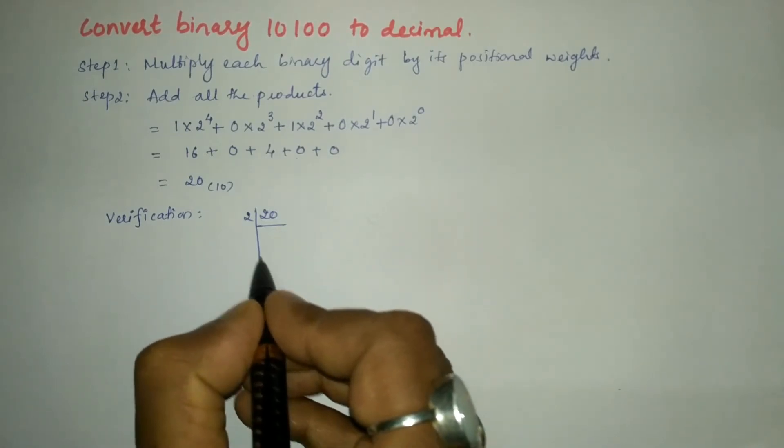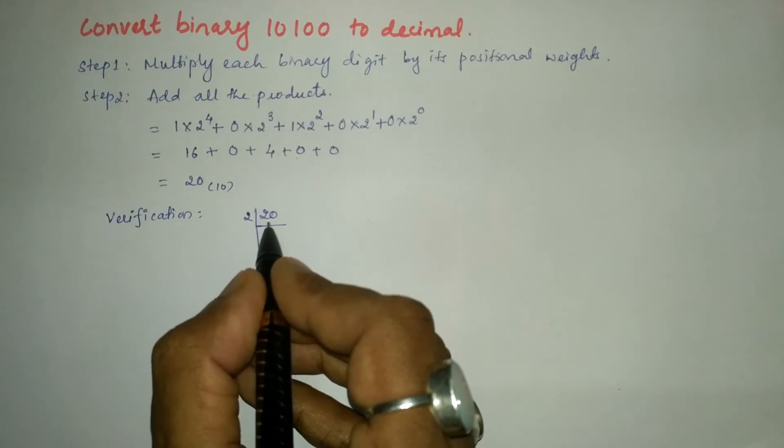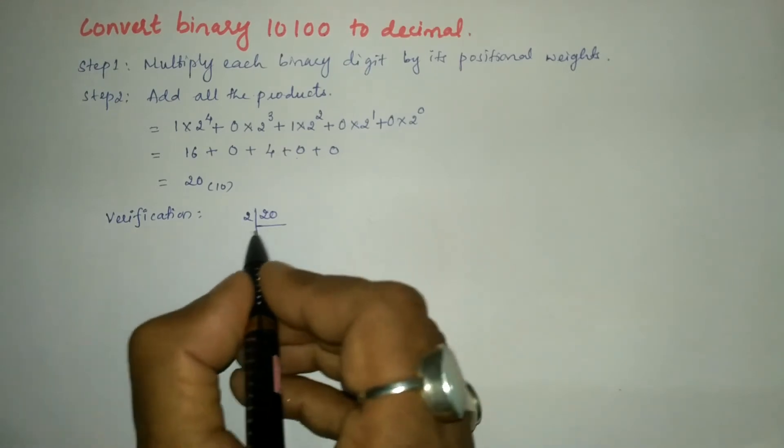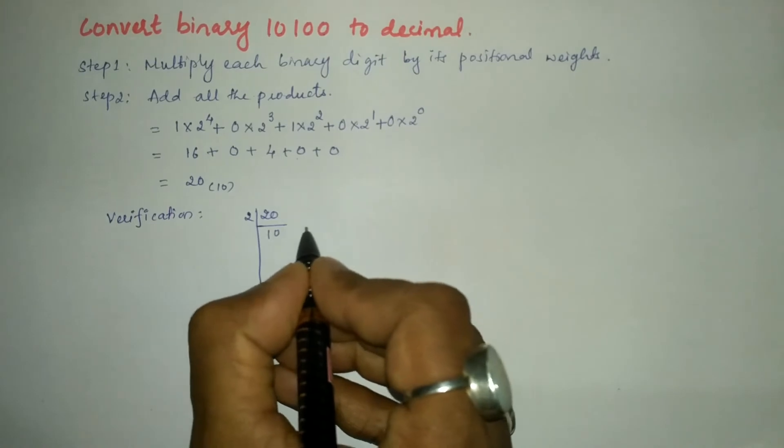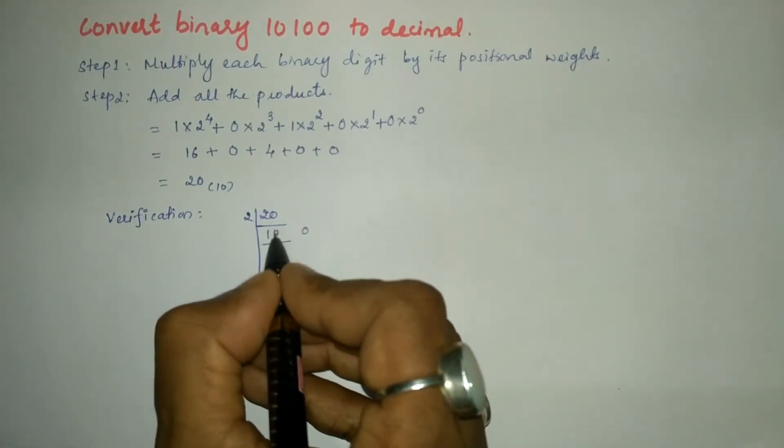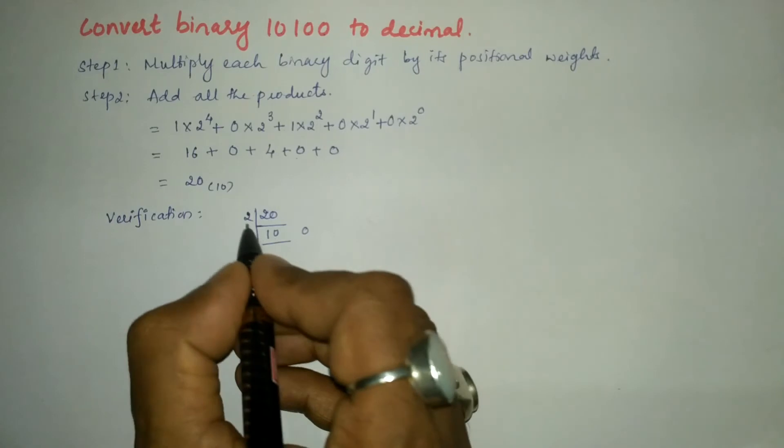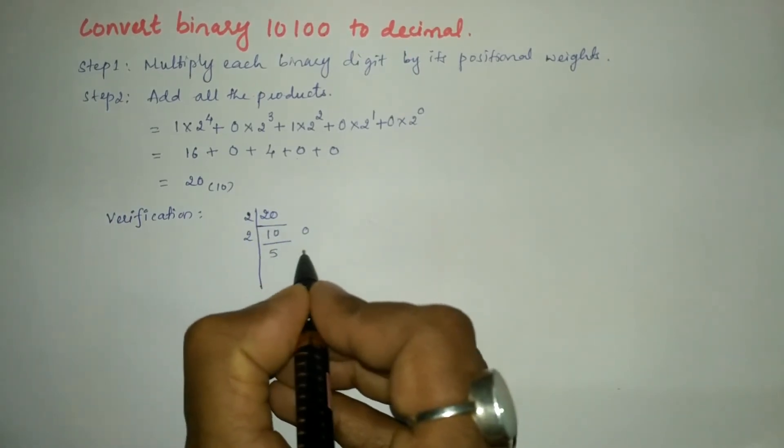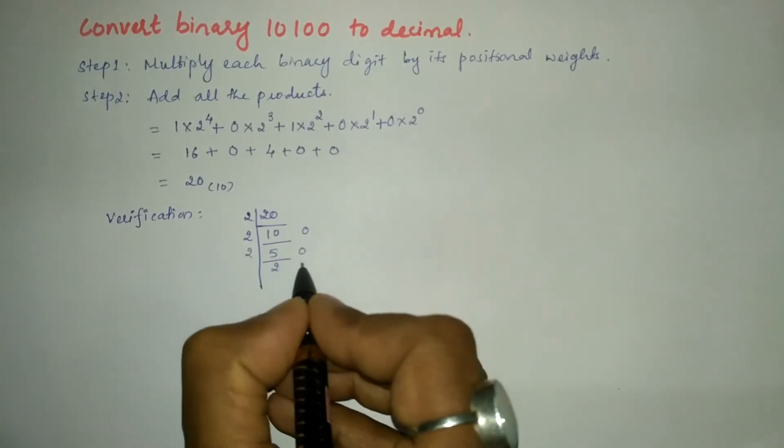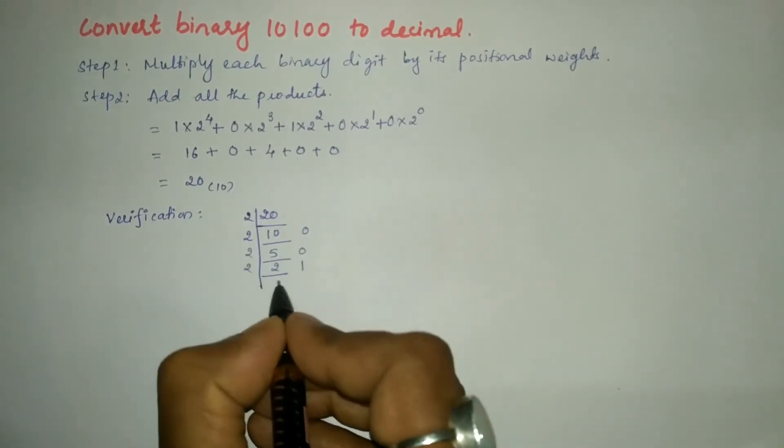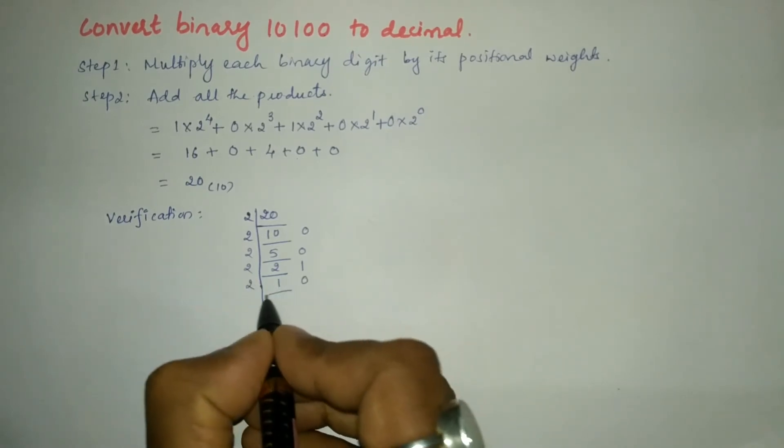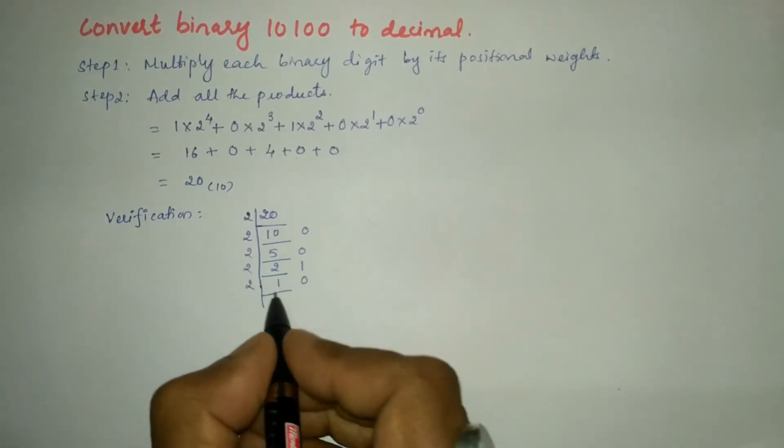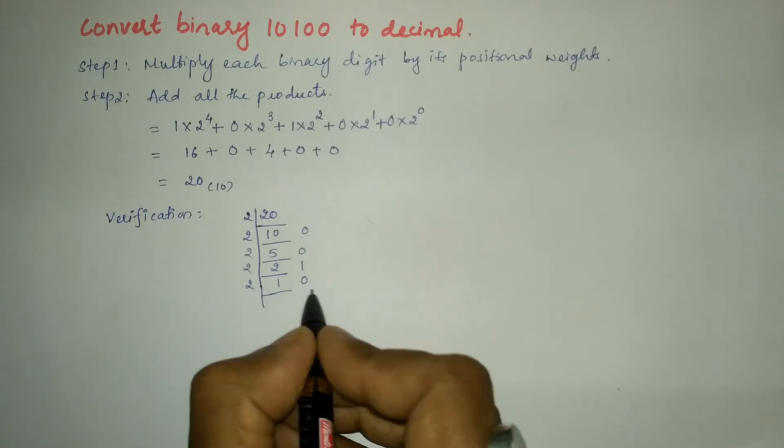Now divide 20 by 2 and note down quotient and remainder. Keep dividing by 2 till the quotient becomes 0. 2×10=20, remainder 0. 2×5=10, remainder 0. 2×2=4, remainder 1. 2×1=2, remainder 0. Now divide 1 by 2. Here 1 is less than 2. When numerator is less than denominator, numerator acts as remainder and quotient becomes 0.